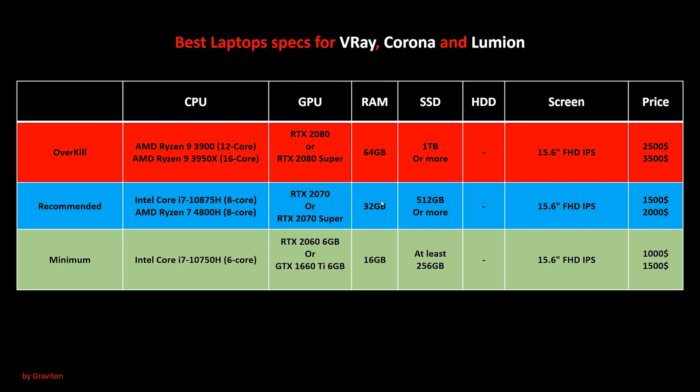About the minimum specs: I will recommend choosing a CPU with 6 cores. For example, the latest CPU from Intel, the Intel Core i7 10750H — this is a 6-core processor, which means it will get 12 rendering threads. And for the GPU, choose either the GTX 1660 Ti or the RTX 2060, which will give you better performance. For the RAM, at least you must have 16GB, and at least 256GB of SSD.